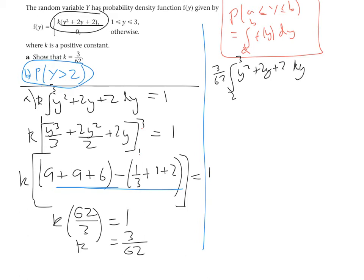And when we work this out, we'll get our probability that y is greater than 2. So let's go through these steps. So we'll get y cubed over 3 plus 2y squared over 2 plus 2y between 2 and 3.